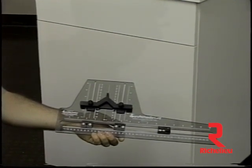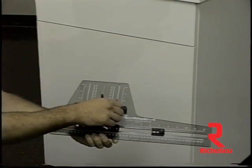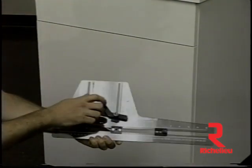To drill for doors, the fence is set at a desired position and the stop is moved to contact the drill bushing holder.